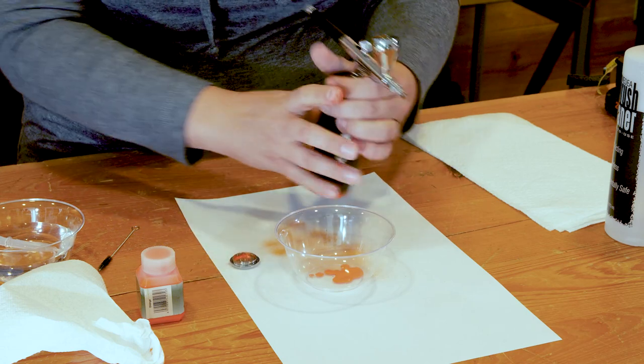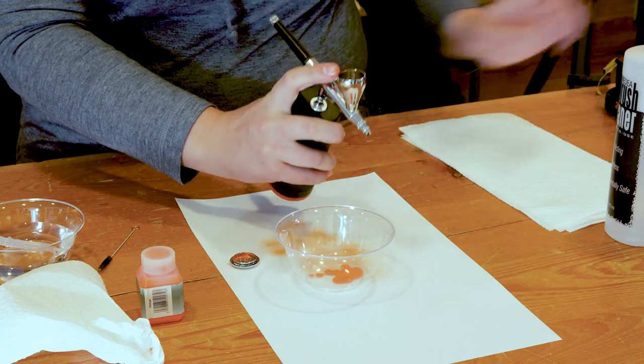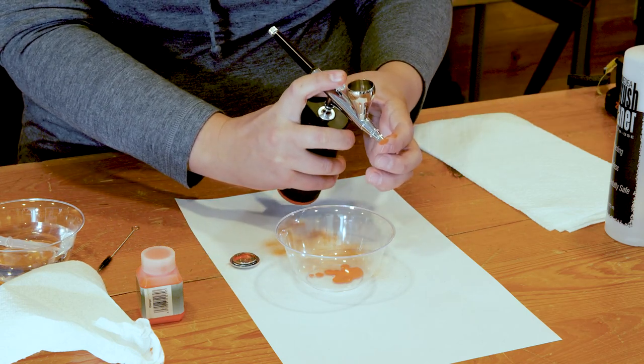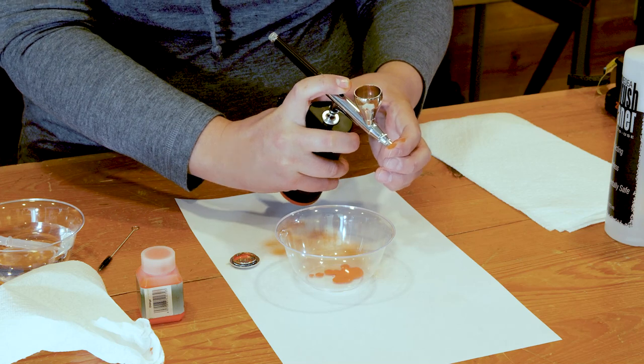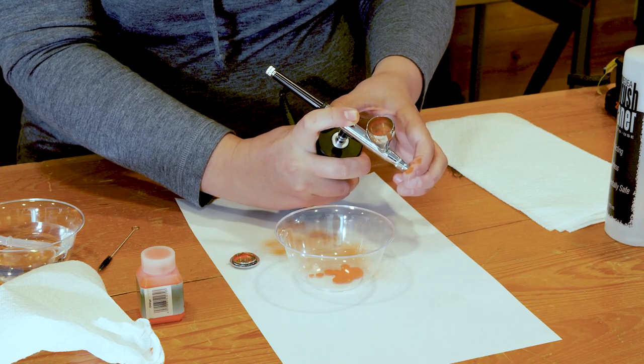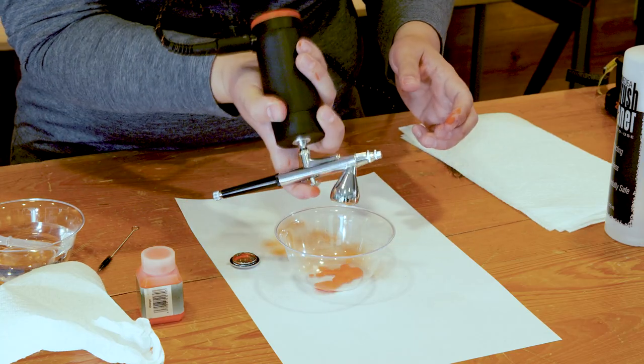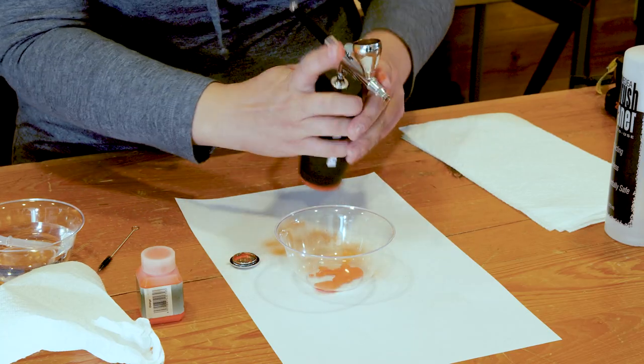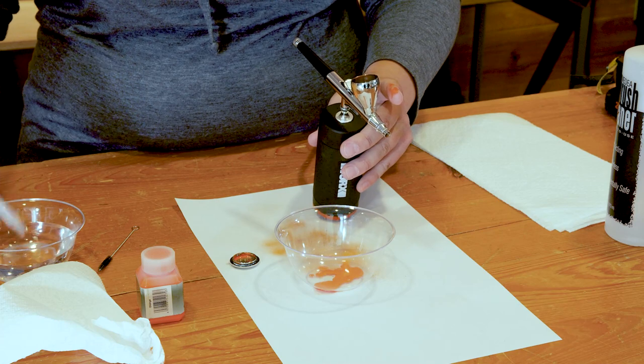So you can keep your lid off and turn your unit on. Put your finger over the nozzle, push down, pull back, and you're going to see a little bit of bubbling. That's good. That's letting the paint clean through. So you're going to want to dump that and then repeat this process a few times.